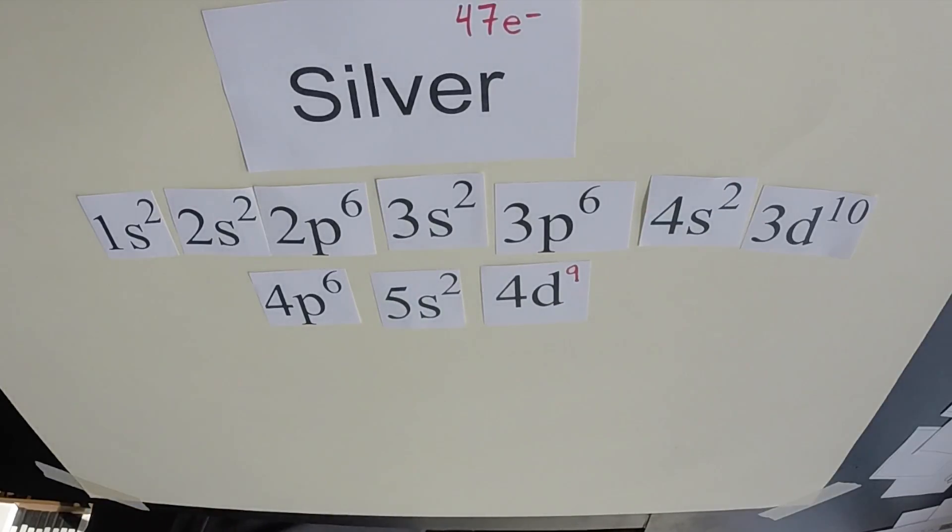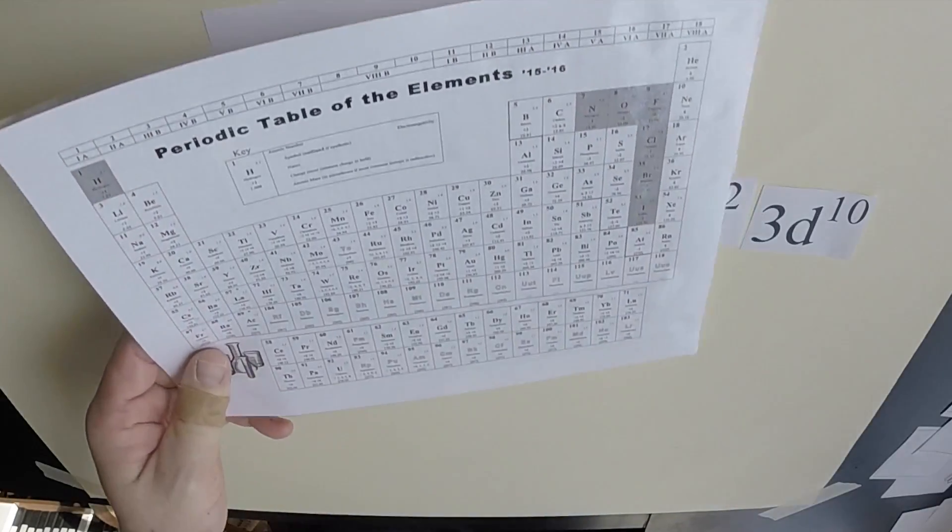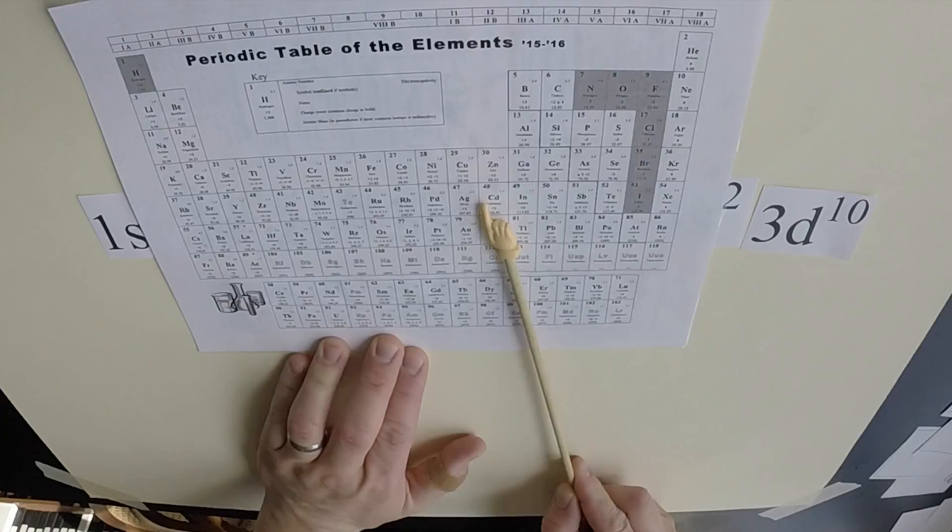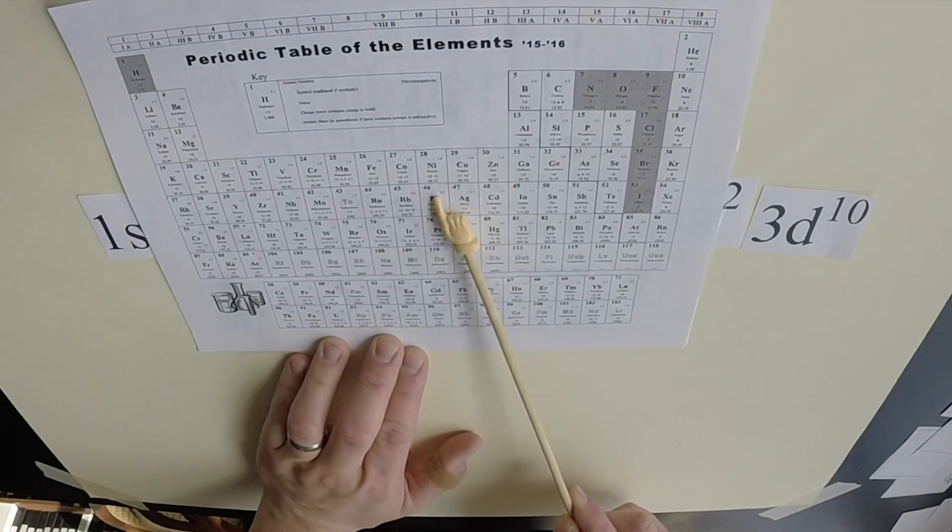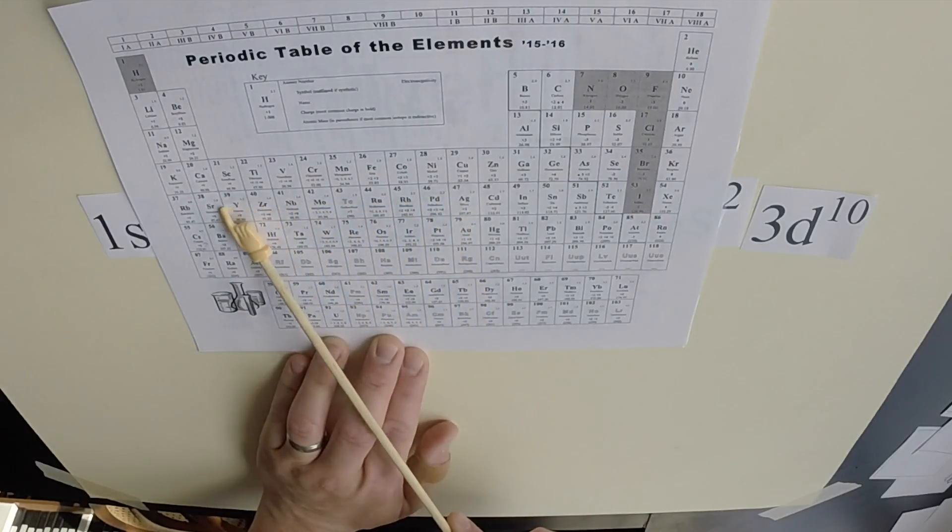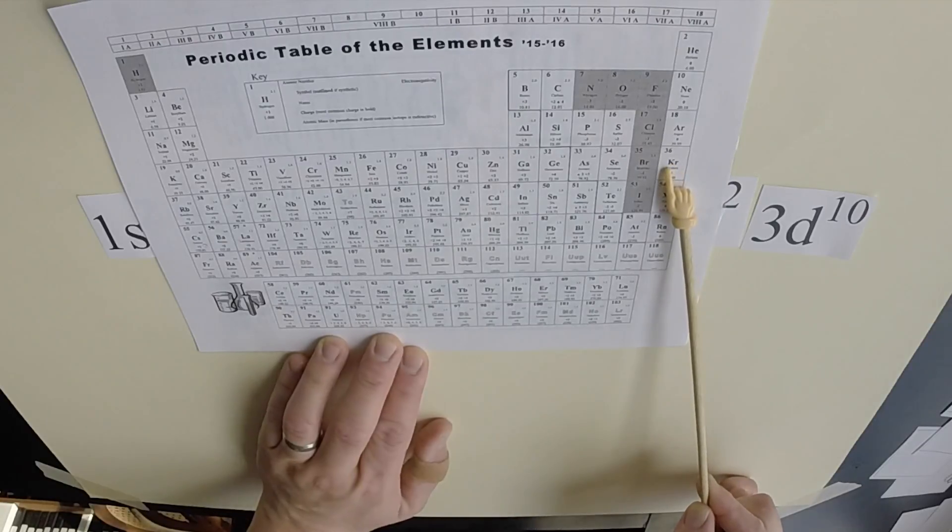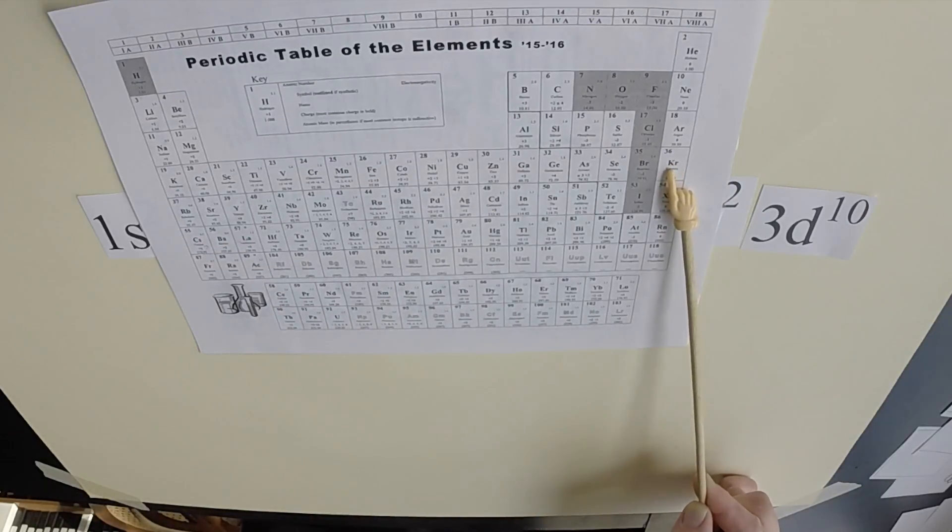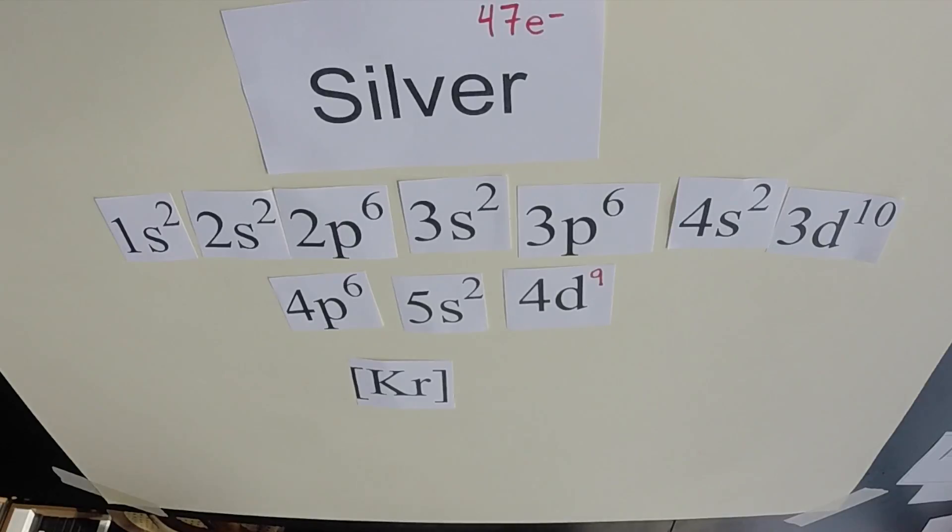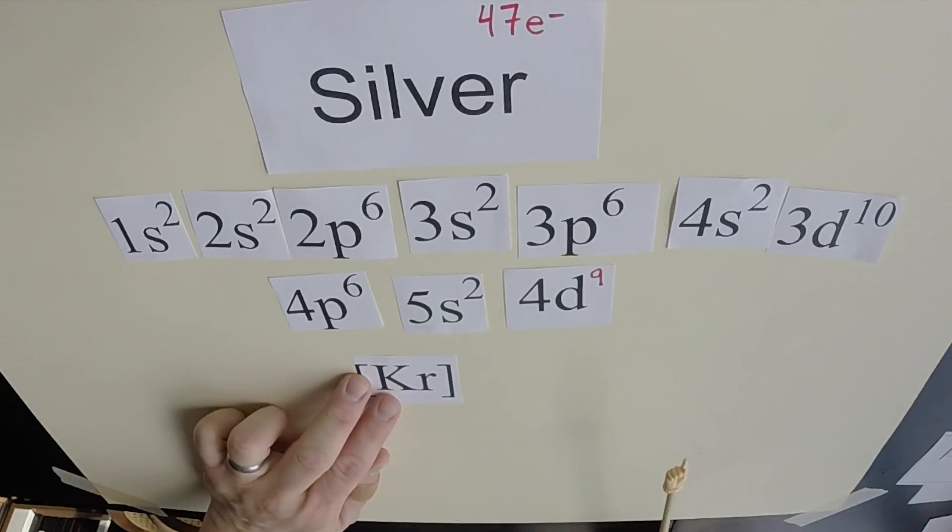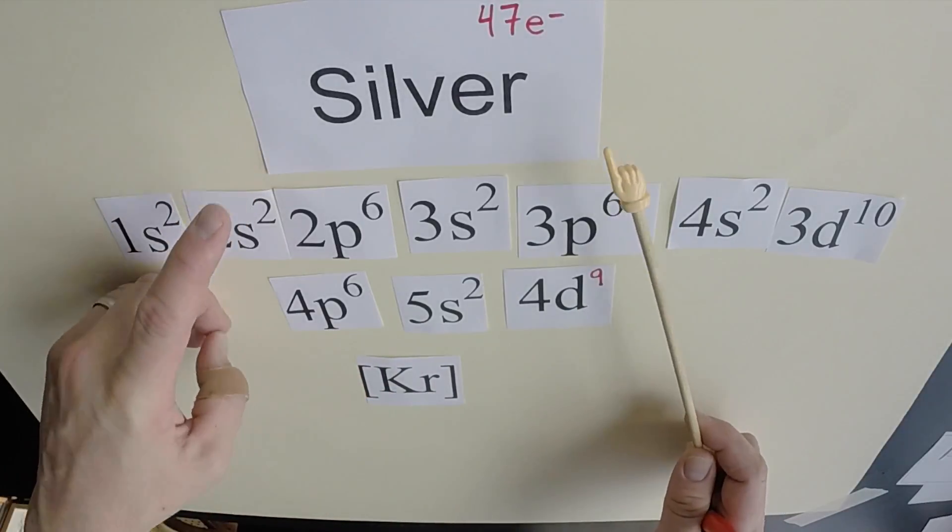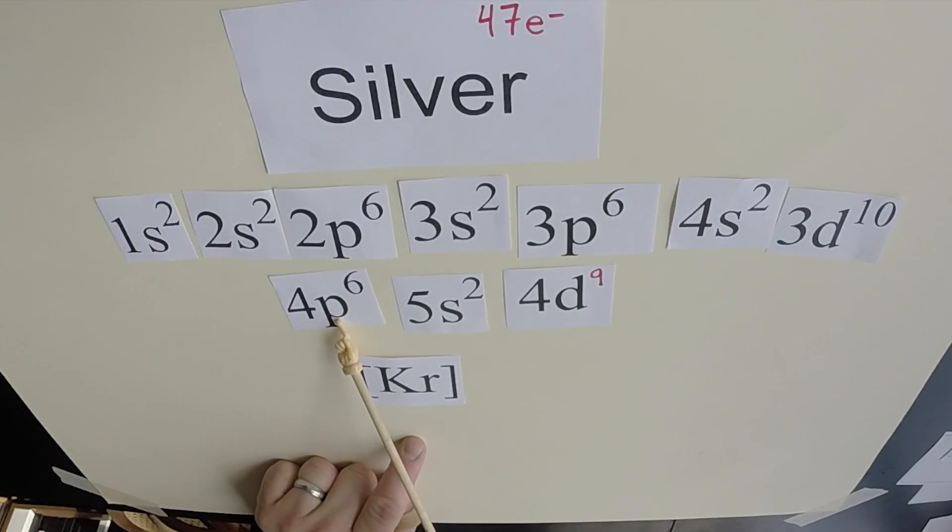Now, the next thing we can do is our noble gas shortcut. So again, looking at our periodic table, here's silver. We're going to work our way backwards from silver by atomic number 47, 46, work our way all the way back, and we come to 36. Krypton is the next noble gas down. So as it turns out, krypton's electron configuration is the same as silver's all the way up to 4p6.